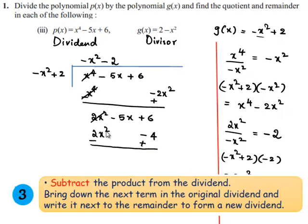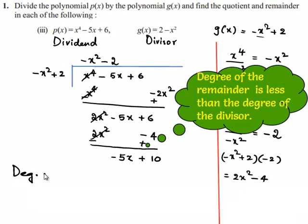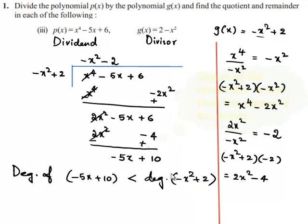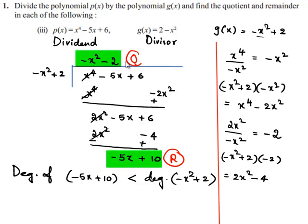2x square and minus 2x square will be cancelled, and here we will be getting minus 5x plus 6 plus 4, which is plus 10. Now, the degree of minus 5x plus 10 is less than the degree of minus x square plus 2, which is the divisor. So, we stop the division here. This becomes the remainder and this becomes the quotient.